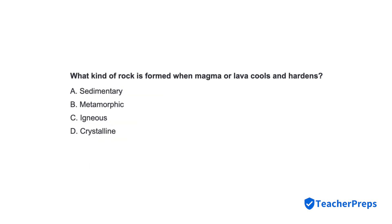What kind of rock is formed when magma or lava cools and hardens? Correct response is letter C: Igneous.